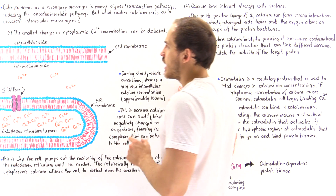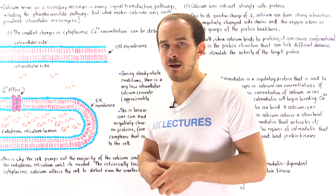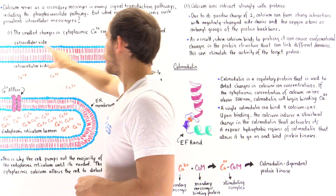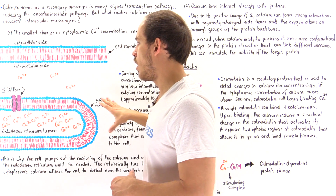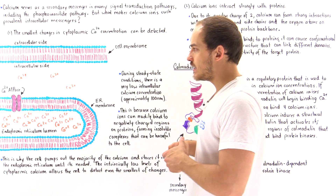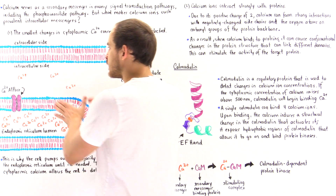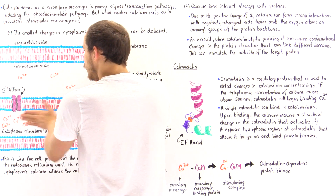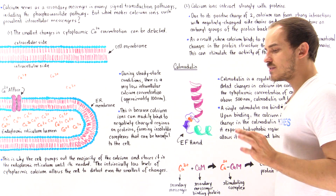Let's focus on number one — the smallest changes in cytoplasmic calcium ion concentration can be detected by the cell. Looking at the diagram: we have the outside of the cell, the plasma membrane, the cytoplasm, and the membrane of the endoplasmic reticulum. Comparing the concentration of calcium ions on the inside — the cytoplasm — to the outside or even the lumen of the ER, we see that inside the cytoplasm there is a very low concentration of calcium ions.